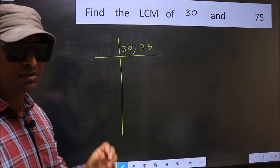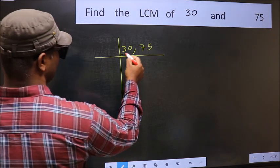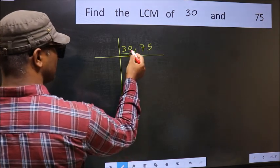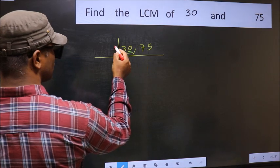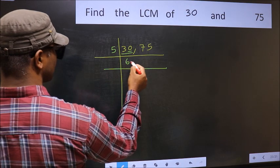Now focus on the first number, which is 30 here. In this number, last digit is 0, so take 5. When do we get 30 in 5 table? 5 times 6 is 30.